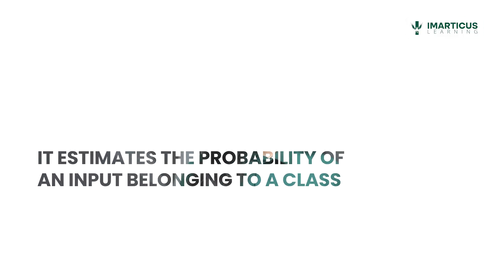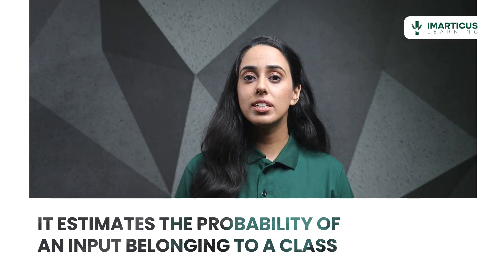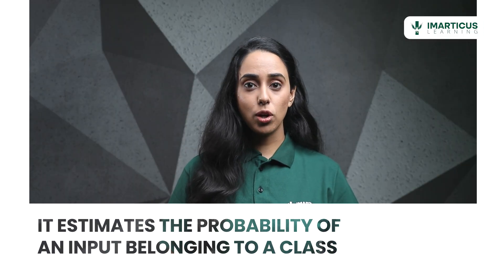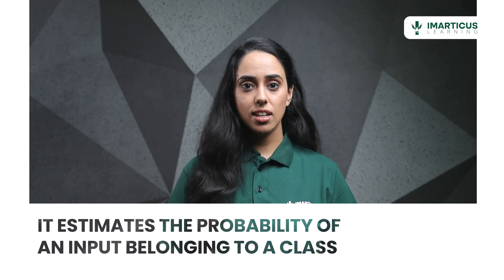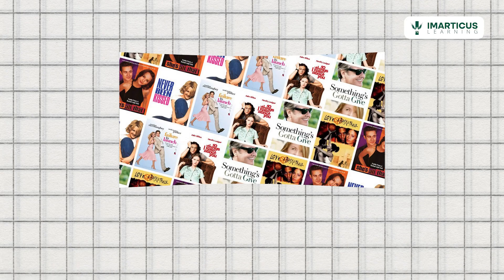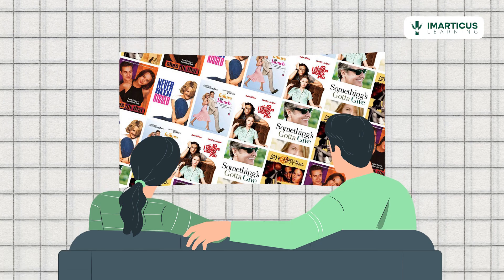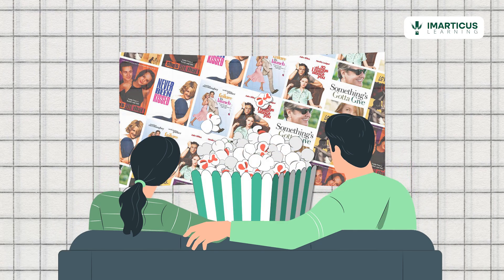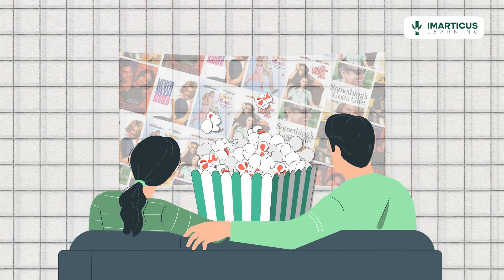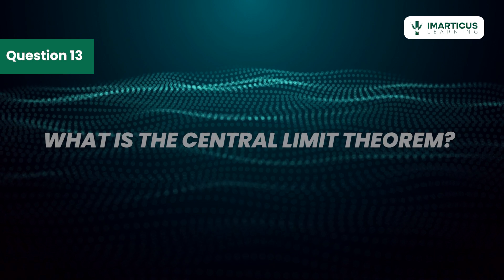Logistic regression is your go-to for binary classification tasks. It estimates the probability of an input belonging to a class — like whether or not you will enjoy a rom-com based on your love for popcorn. If the probability is high enough, you're in for a good time.